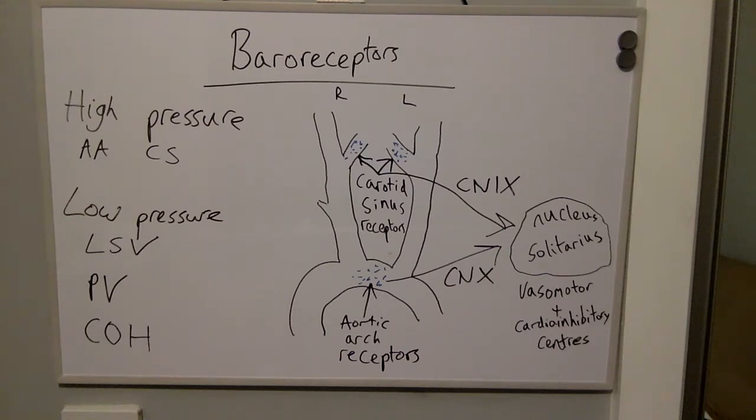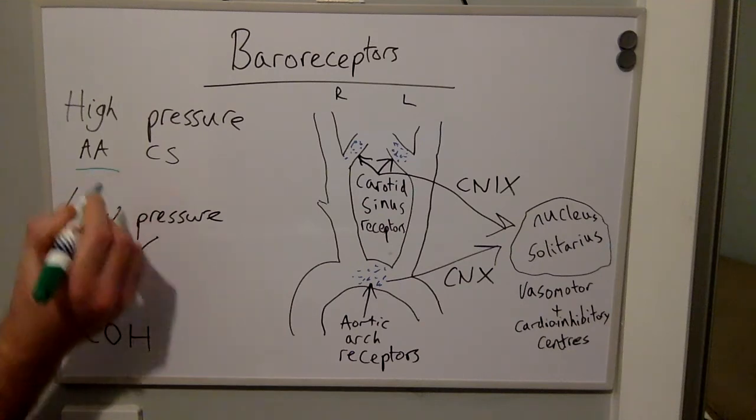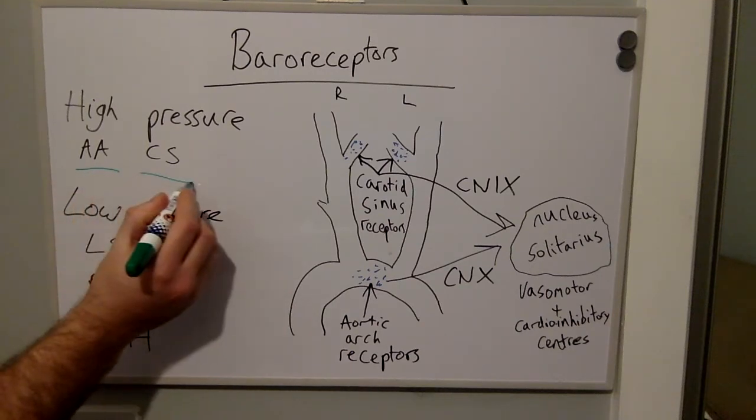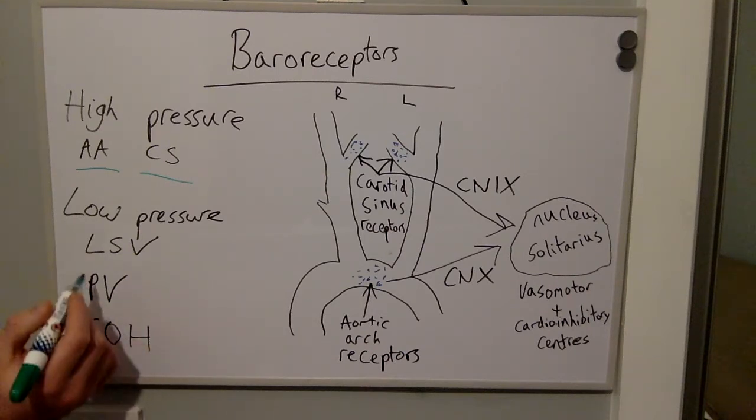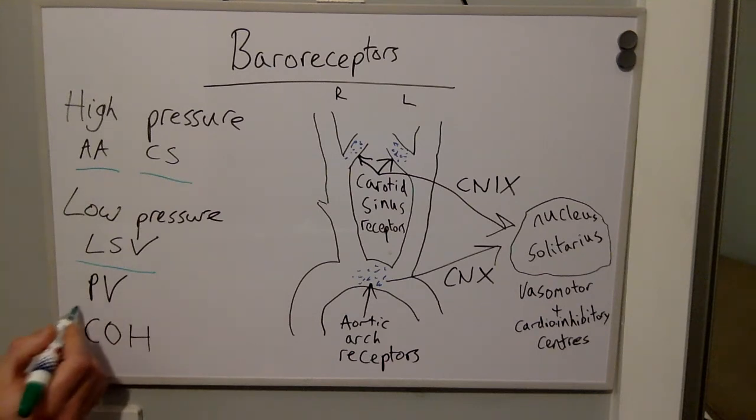We have low-pressure baroreceptors and high-pressure baroreceptors. High-pressure baroreceptors are located in the aortic arch and the carotid sinuses. Low-pressure baroreceptors are located in large systemic veins, the pulmonary vasculature, and the chambers of the heart.